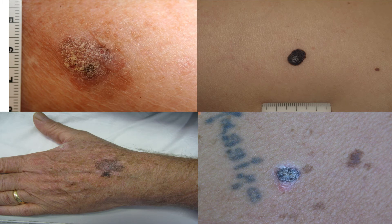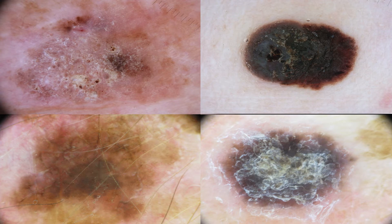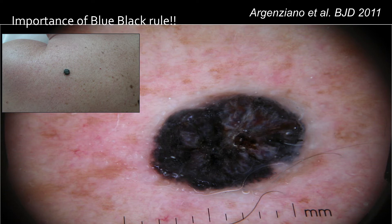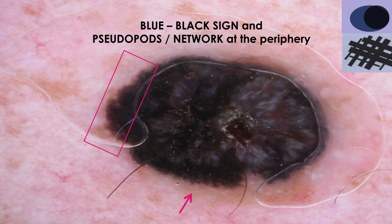In these examples we could identify the pitfalls — the features that can make you miss a melanoma as a seborrheic keratosis tumor. The main features to take into account are the abrupt borders, the fissures and ridges, and the hyperkeratotic scale. These were the features that can make you miss a melanoma if you only pay attention to them. On the contrary, we identified the most important criteria to correctly diagnose these melanomas. One of the most important is the blue-black rule: if you see a keratotic lesion with the presence of blue-black coloration, you must be very careful. In addition to this blue-black sign, you can find pigment network and pseudopods.